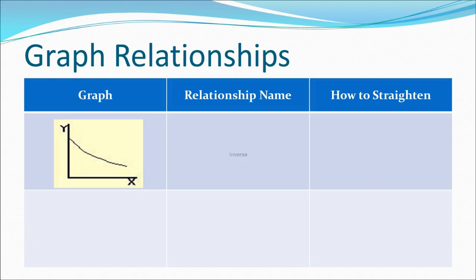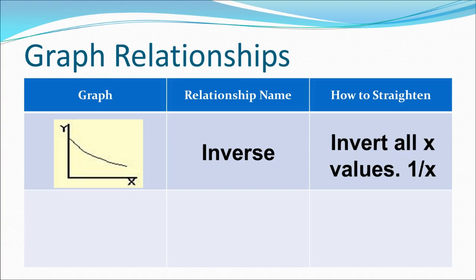This graph is called an inverse relationship. As x increases, y decreases — they move in inverse ways. To straighten this graph, invert all x values. You can either substitute all of the x values into the formula 1 divided by x, or use the inverse button on your calculator.